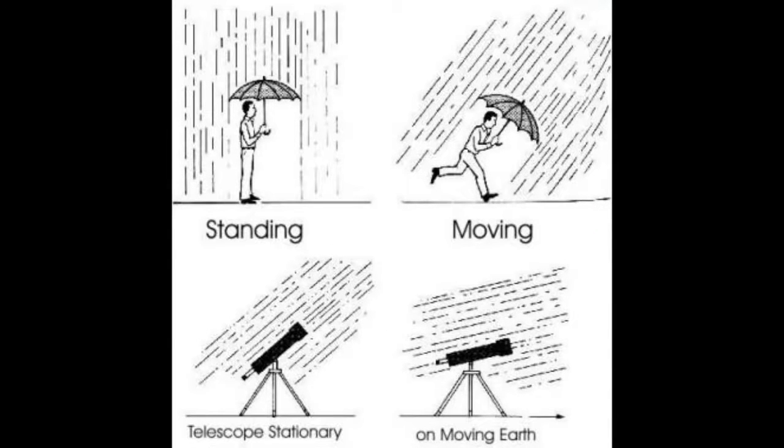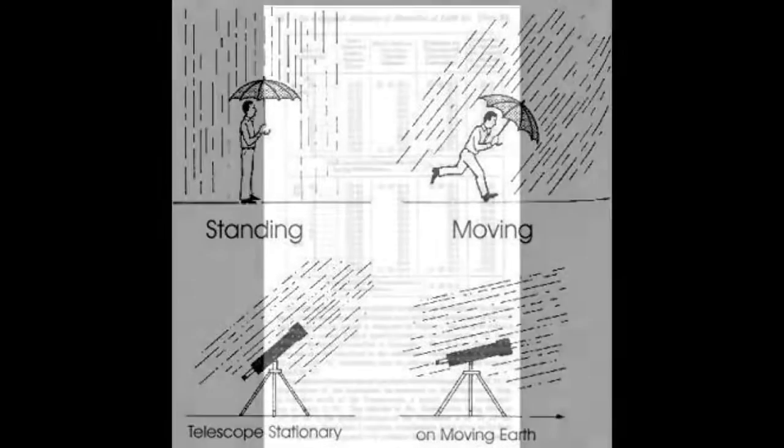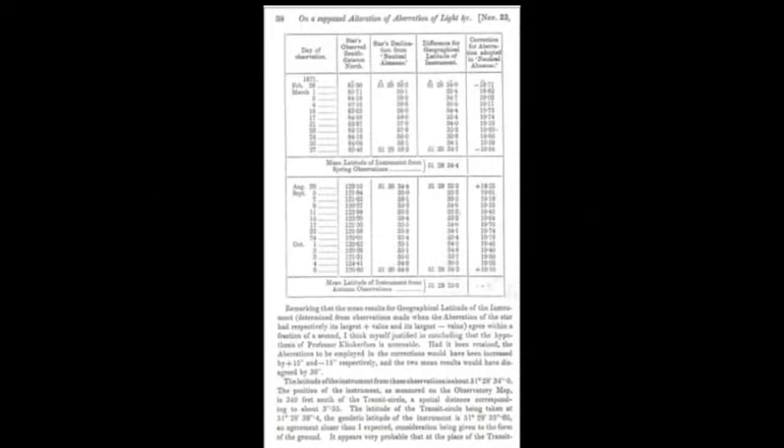Though George Airy expected a necessary adjustment of 30 seconds of an arc, he failed to mark even so much as a single second's adjustment, proving that the telescope, and thus the Earth, was stationary.